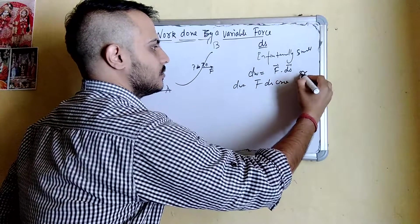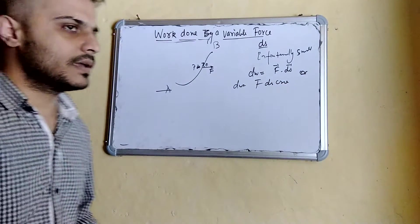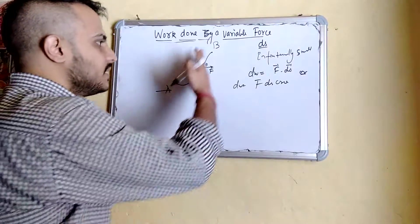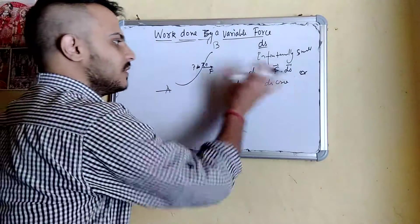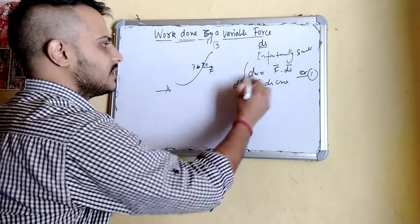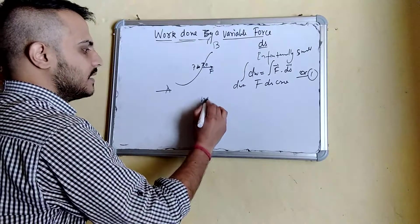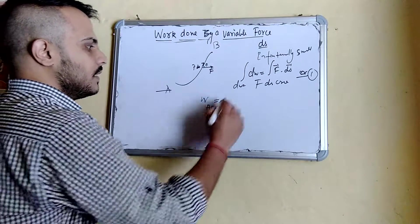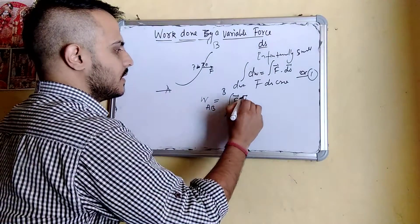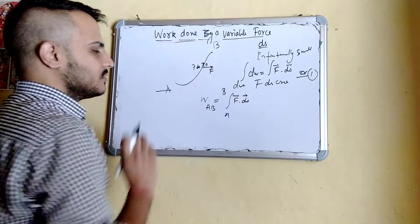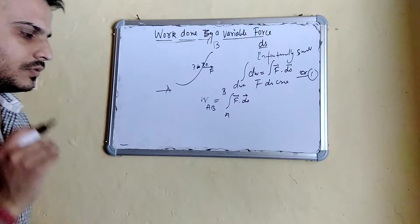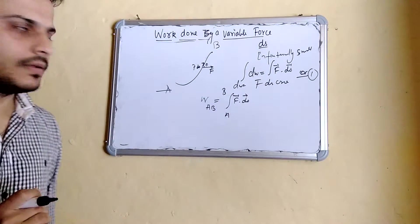We can write both of these expressions. Now, if we want to find the total work done, we need to take the help of integration. We have to take the body from A to B, so we integrate this expression. W_AB is equal to the integration from A to B of F dot ds. Force and displacement are vector quantities, but work is a scalar quantity. This gives us the expression for work done by a variable force.